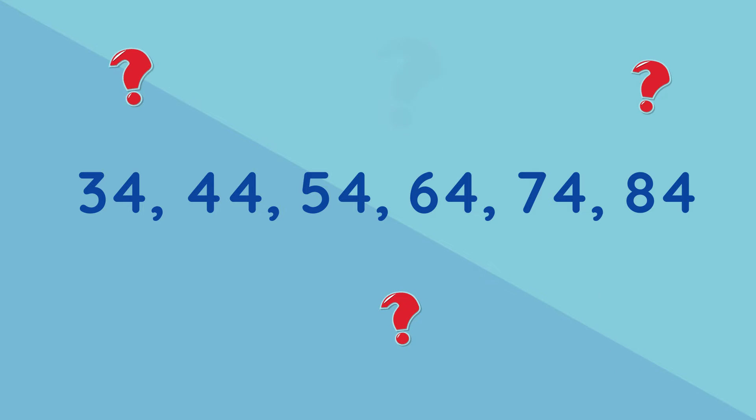What number are we adding to each previous number to keep adding to the sequence? Well 34 plus 10 is equal to 44, 44 plus 10 is equal to 54. So the pattern here is to add 10 which is also skip counting in tens.